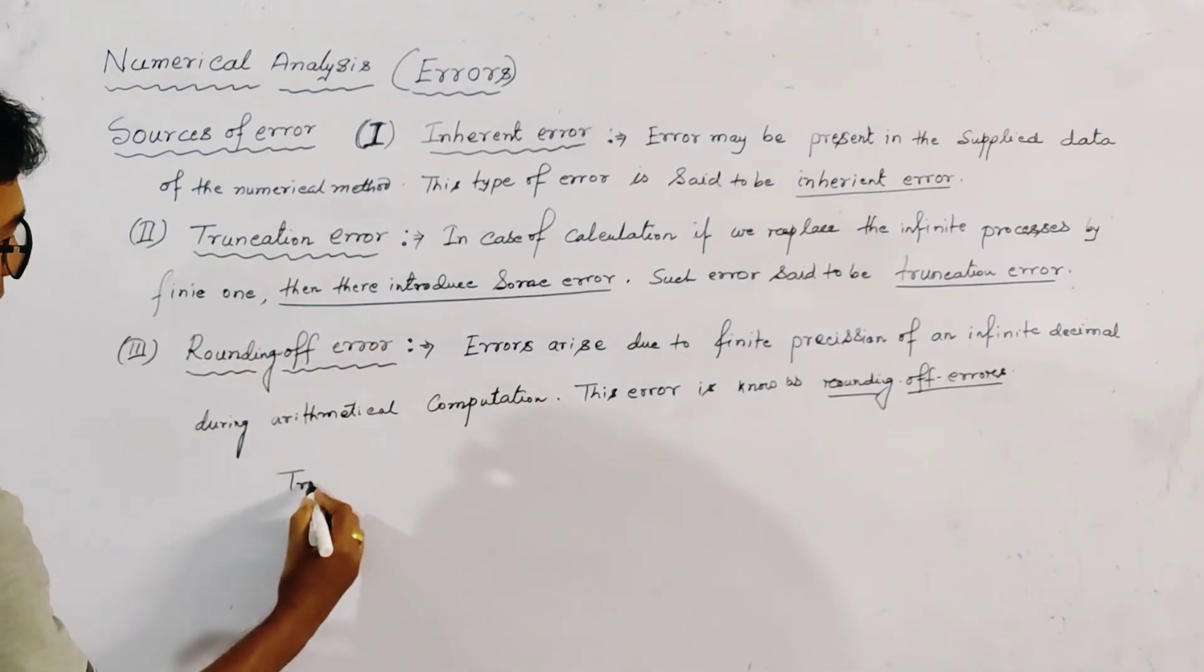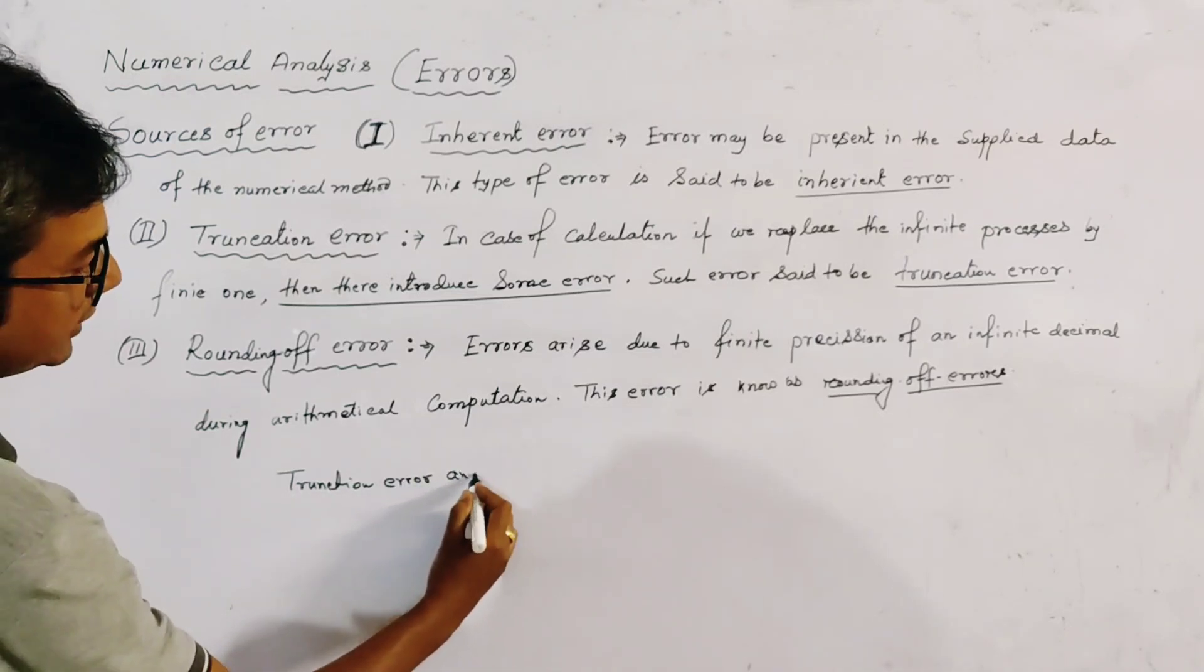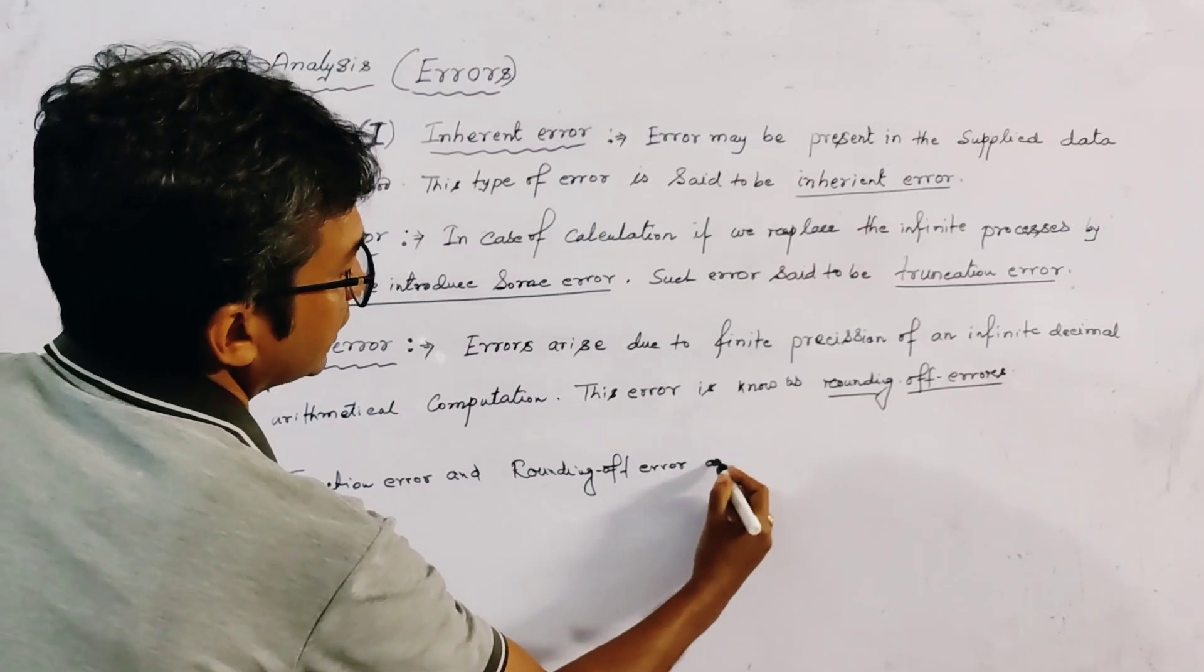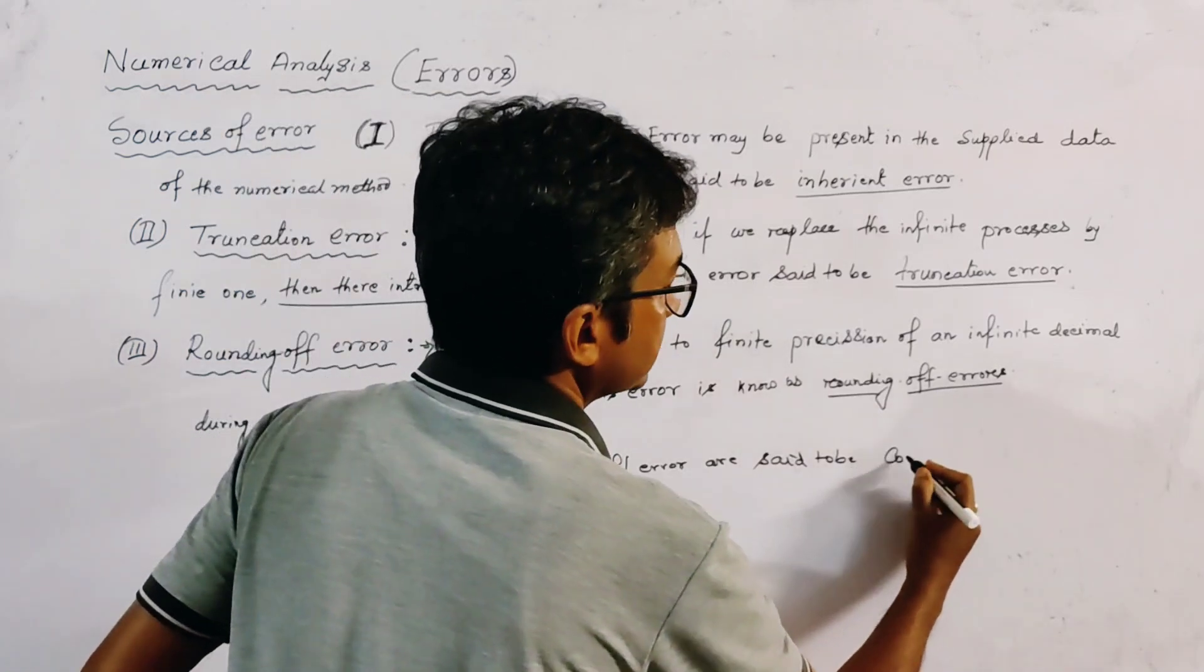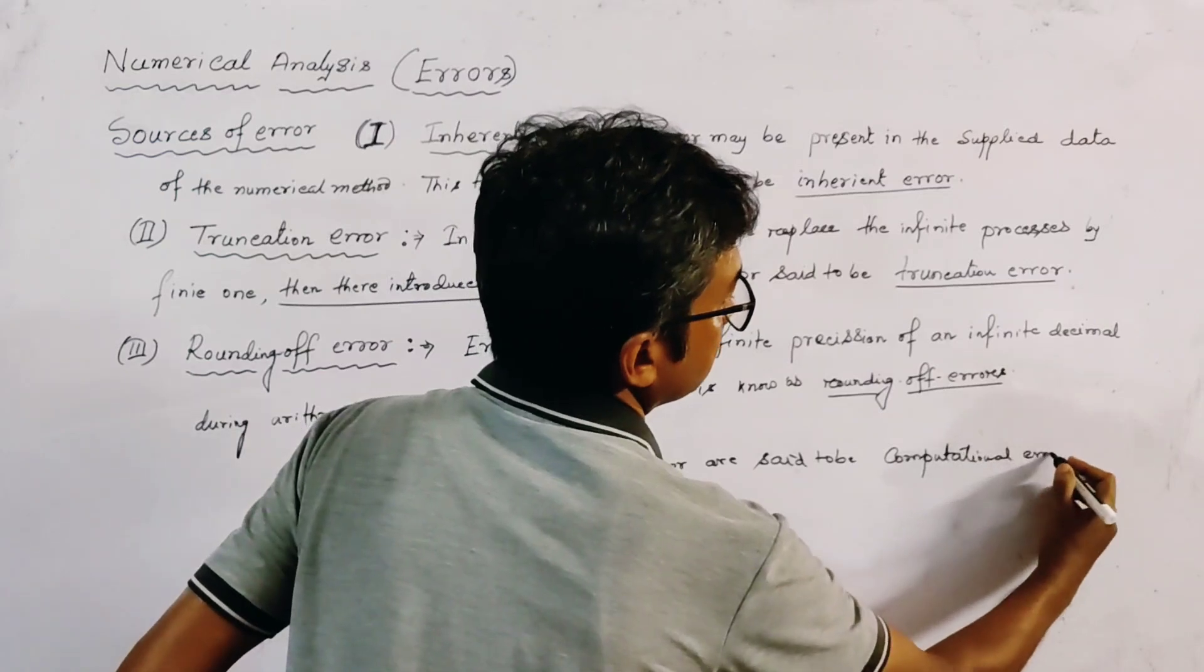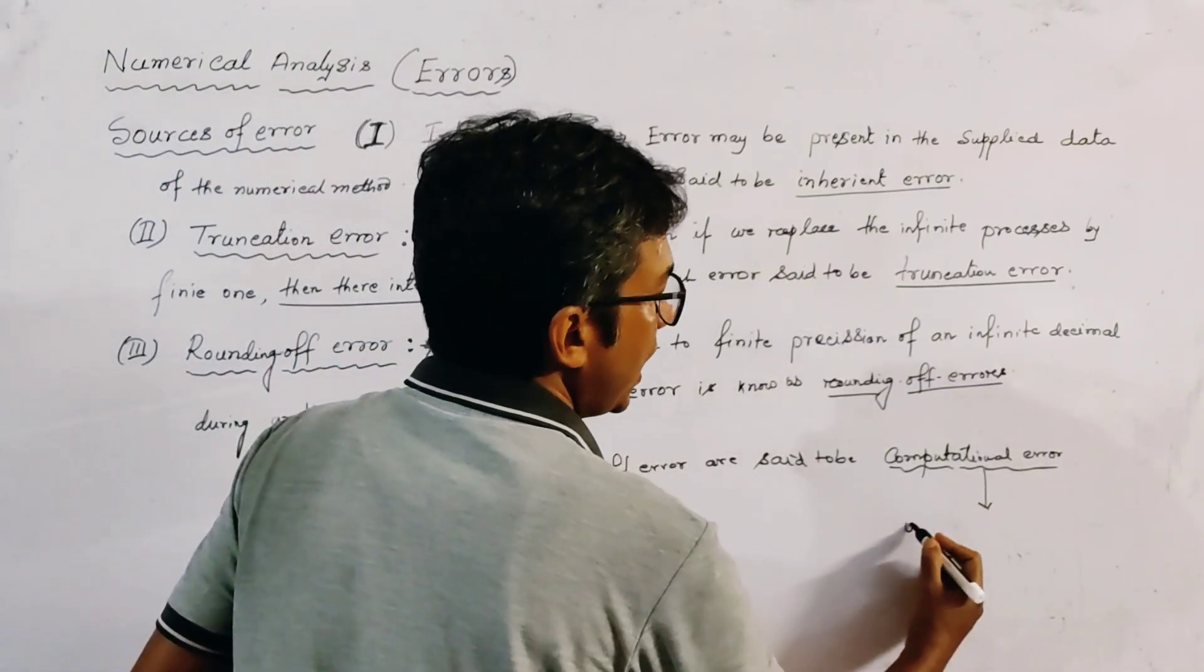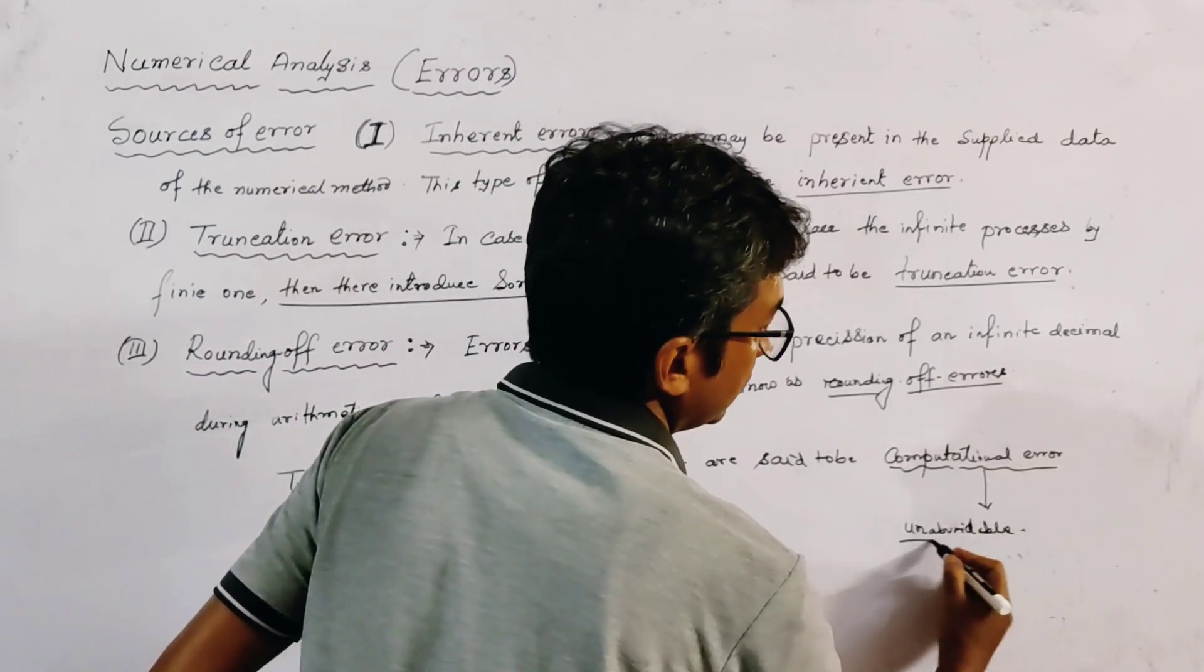And here, truncation error and rounding of error are said to be computational error. These are said to be computational error, and this computational error must be unavoidable.